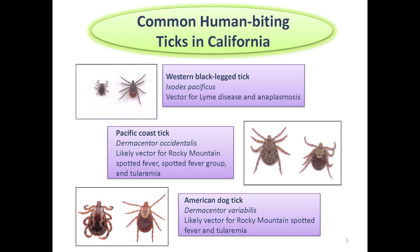The Pacific Coast tick, Dermacentor occidentalis, is likely the vector of Rocky Mountain spotted fever, the spotted fever group of diseases, and tularemia. The American dog tick, Dermacentor variabilis, is likely a vector of Rocky Mountain spotted fever and tularemia.